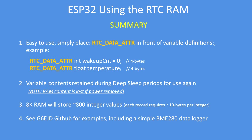In summary, write your program as normal but prefix variables you want to retain during deep sleep with the real-time clock data attribute. During deep sleep the content of those variables is retained; with ordinary RAM they wouldn't be. An 8K RAM will store approximately 800 integer values — each integer takes four bytes, with a small overhead making it about 10 bytes per integer. See my GitHub for examples including a simple BME280 data logger.